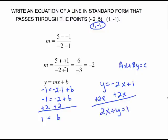If you want to check, you're going to use your other point. So put a negative 2 in for x and a positive 5 in for y. 2 times negative 2 is negative 4. Negative 4 plus 5 is 1, which checks. So there's our answer right there in standard form.